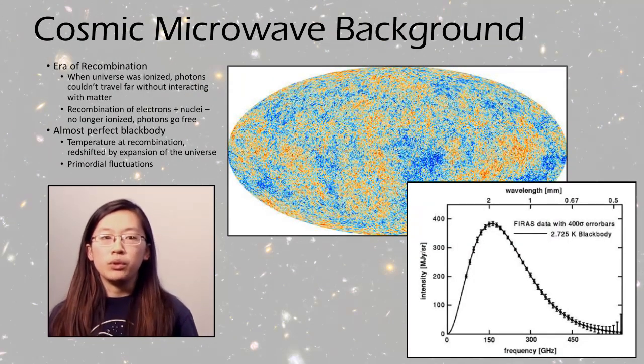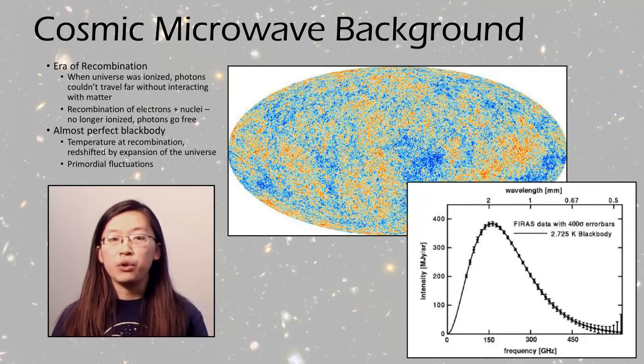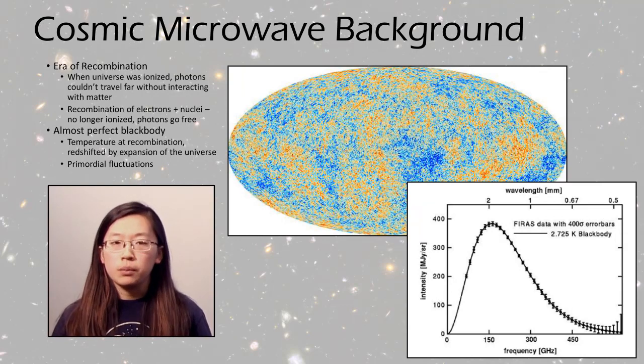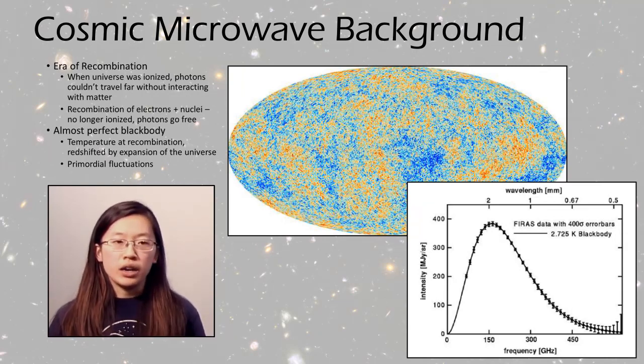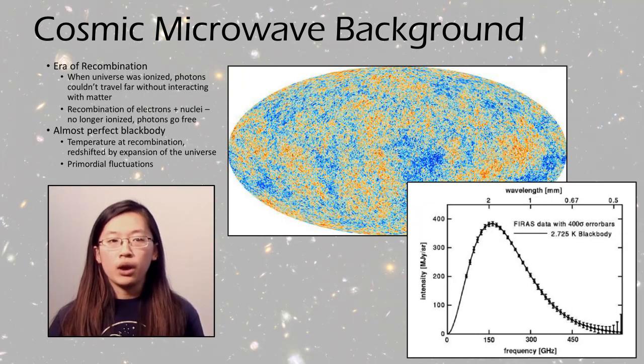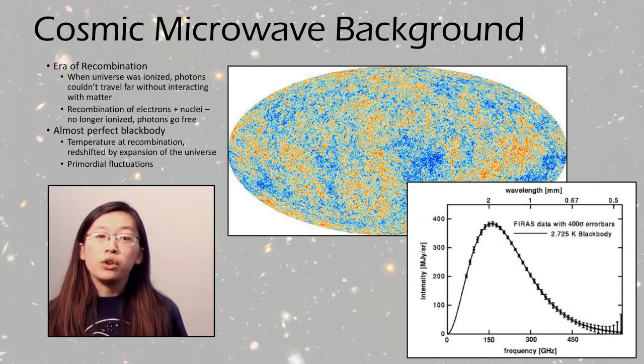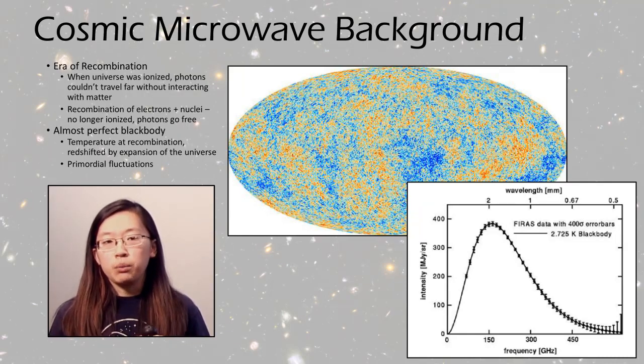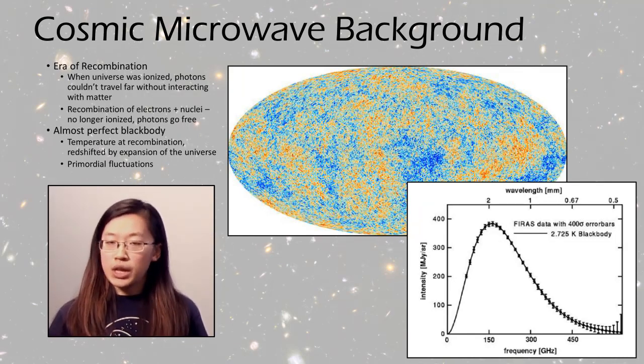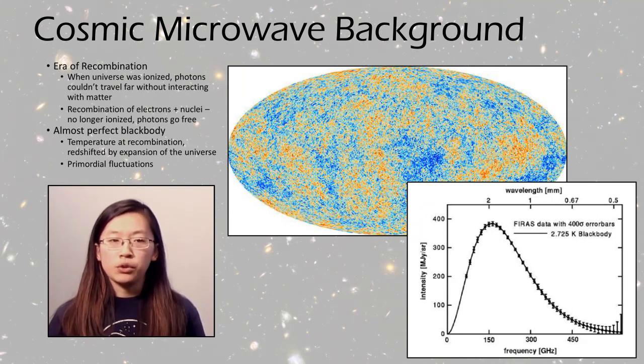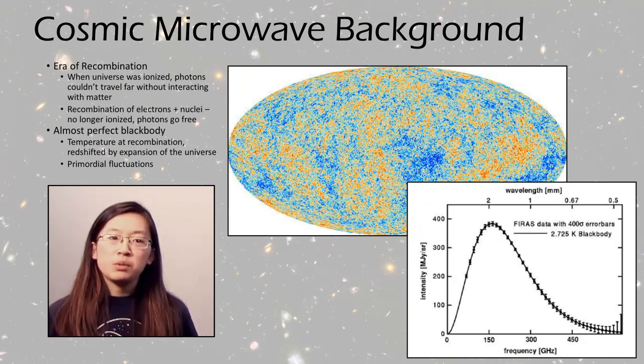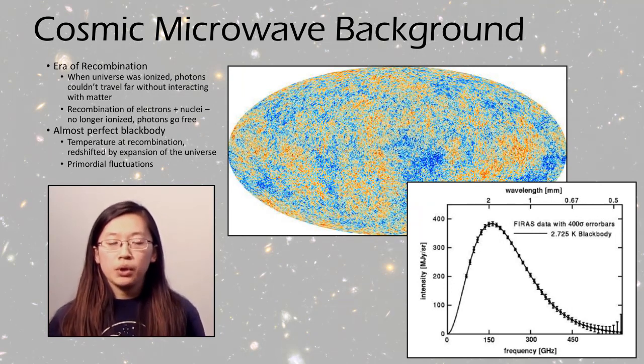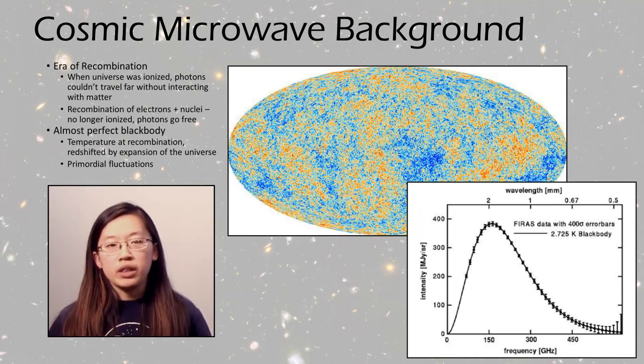Another big topic for this year that I didn't really touch on earlier is the cosmic microwave background, or CMB. This comes from the era of recombination. So early in the history of the universe, everything was ionized, and the photons couldn't go anywhere without interacting with something. However, when the universe cooled off enough that the electrons managed to recombine with their nuclei to form atoms, the universe was then no longer ionized, and the photons could go on their merry way. And so the cosmic microwave background is the photons that we see from this time, but red shifted by the expansion of the universe.